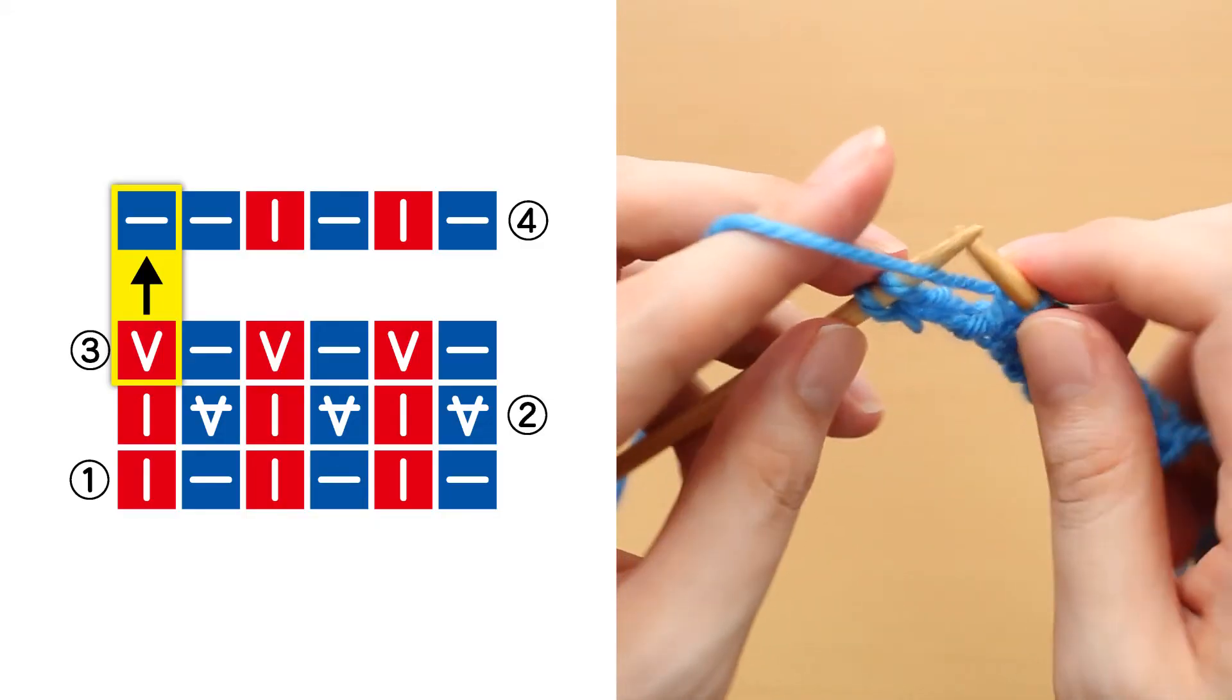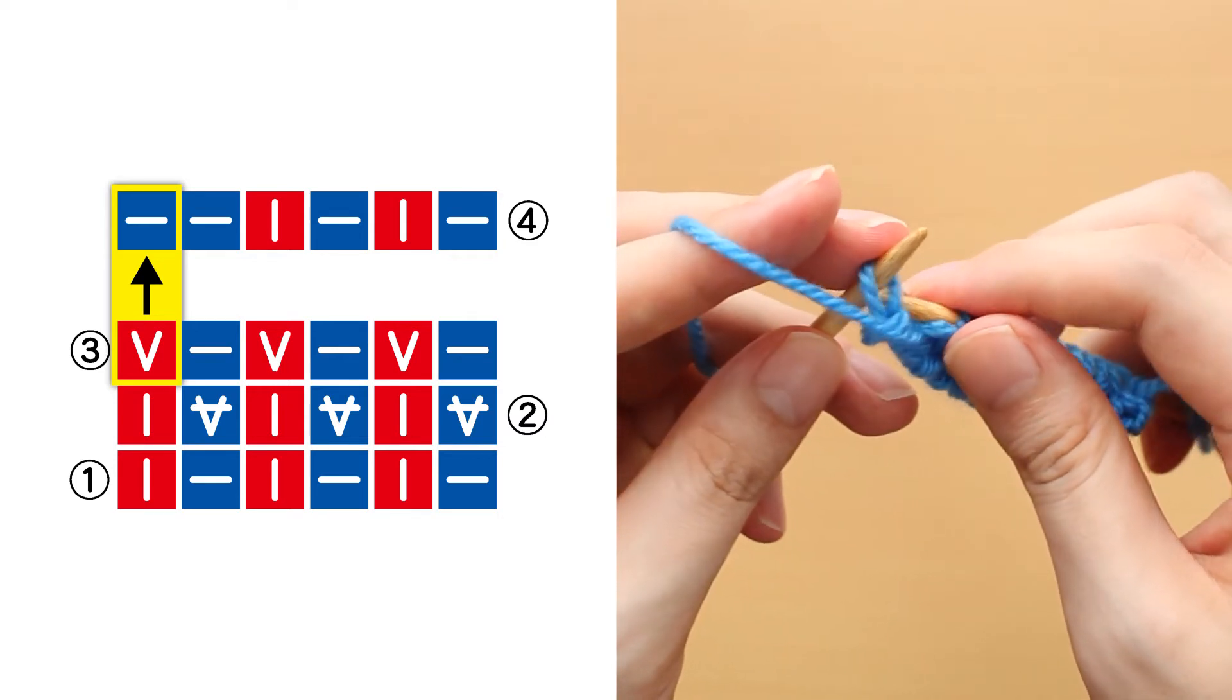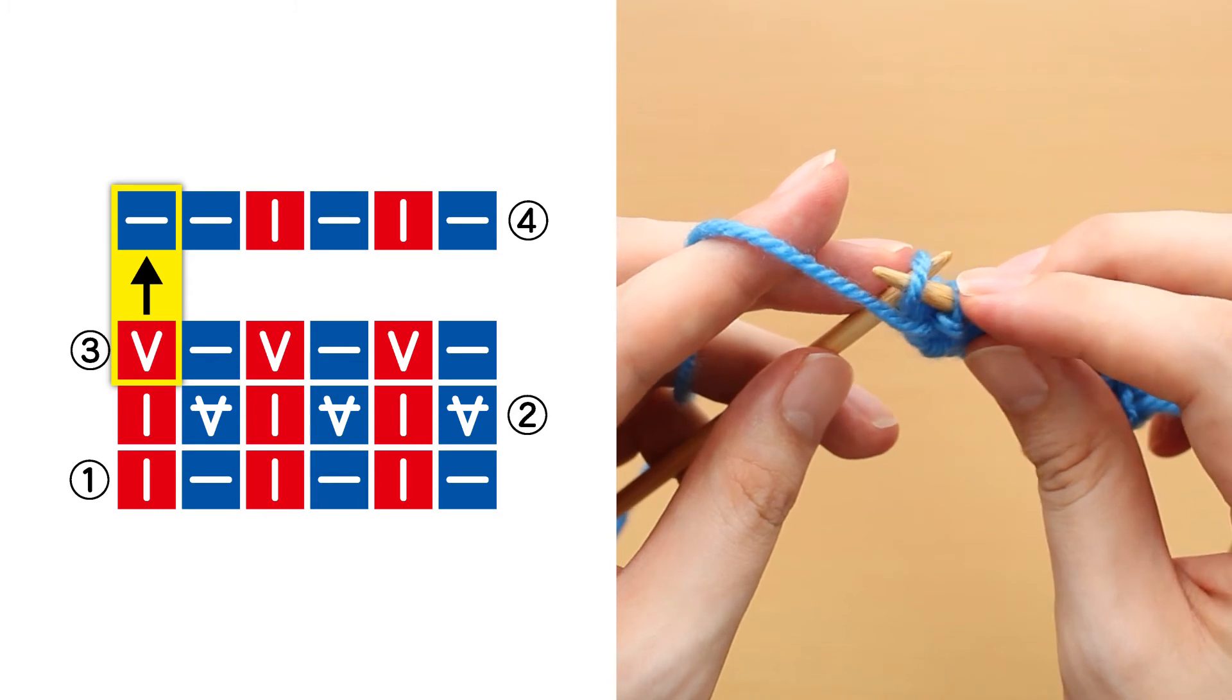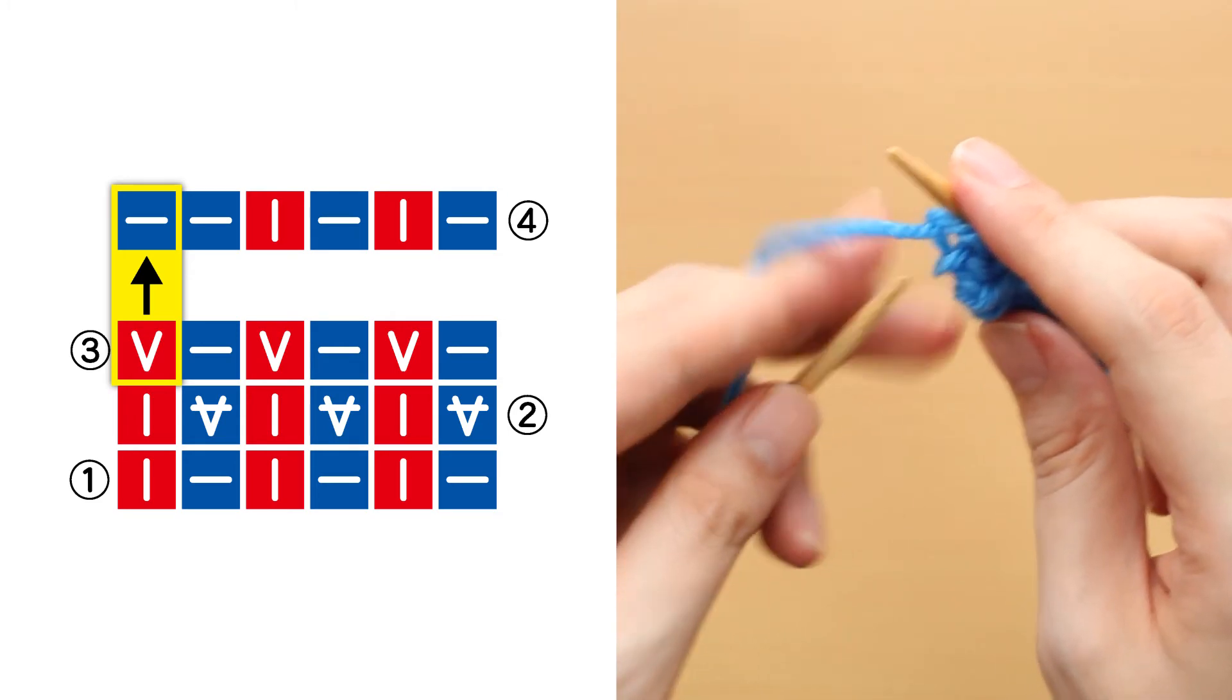In the case of 1 by 1 rib with 2 knit stitches on the right end, or 2 by 2 rib which is a modified version of it, it is necessary to knit 2 rows of double knitting and make a round because it is necessary to switch between knit stitch and purl stitch.